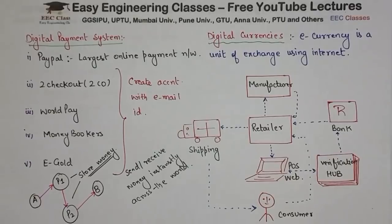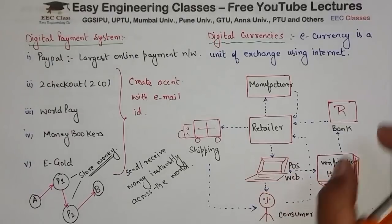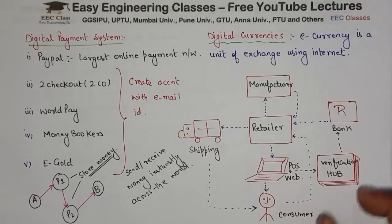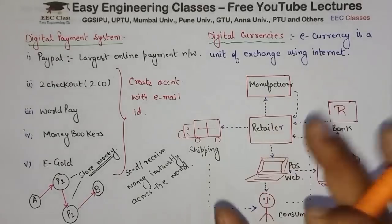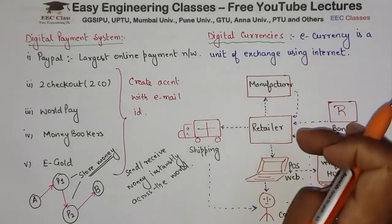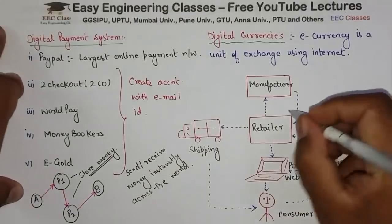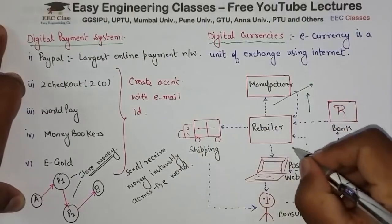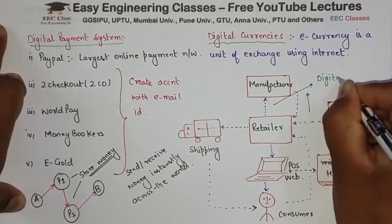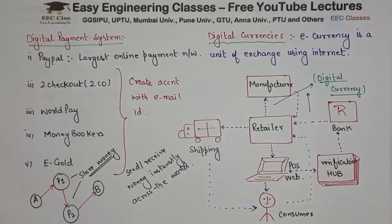In this digital currency flow diagram, at the point of sale, payment information is sent and verified. If everything is verified, the retailer sends payment to the bank, the manufacturer gets the payment, ships the product, and the consumer ultimately receives it.